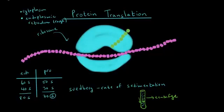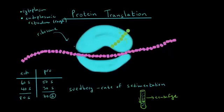The next question is: the ribosome is putting together its polypeptide, stringing together amino acids, but where are the amino acids coming from? The answer is that floating around in the cytoplasm and in the endoplasmic reticulum, we have molecules called tRNA. They hold onto amino acids and bring the amino acids to the ribosome.